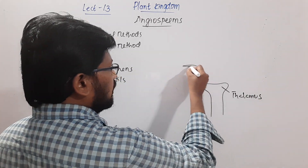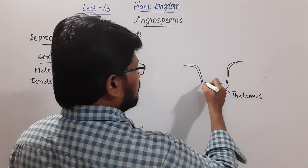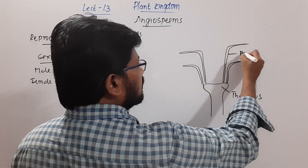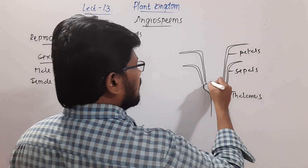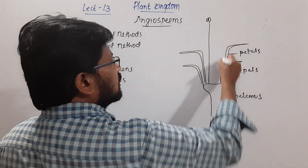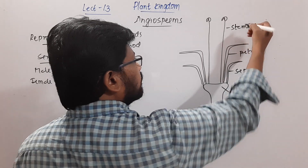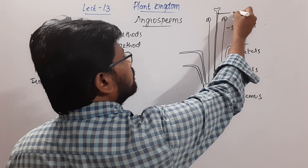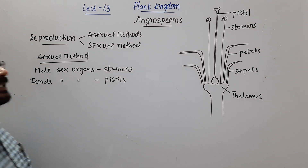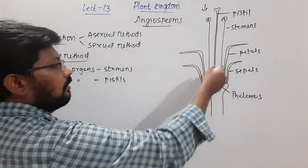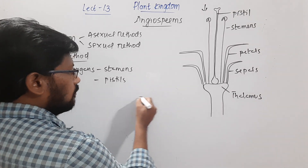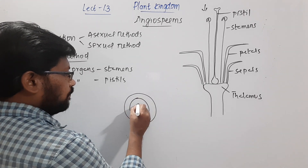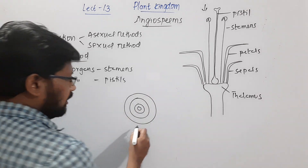On the thalamus we see the sepals, then the petals, then the stamens, and at the center we see the pistil. When we look at the flower from the top, all these floral parts are present in four rings, which we call whorls — one, two, three, and the innermost whorl.